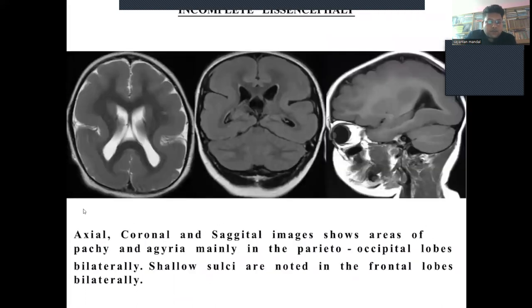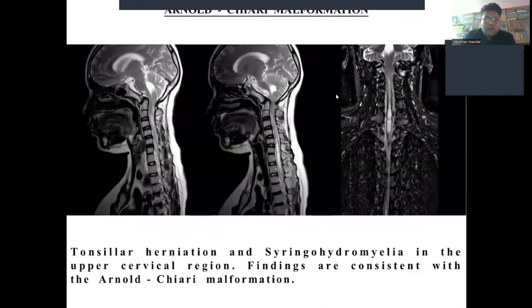In this case, axial, coronal, and sagittal images show areas of pachygyria and agyria in the frontal lobes bilaterally. This is a case of incomplete lissencephaly. In this next case, we can see tonsillar herniation with syringohydromyelia in the upper cervical region, findings consistent with Arnold-Chiari malformation.